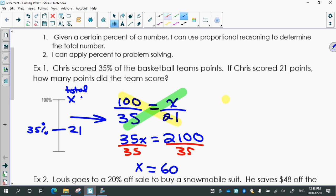So 2100 divided by 35 is 60. So what does that mean? That's the team. Therefore, the team scored 60 points.